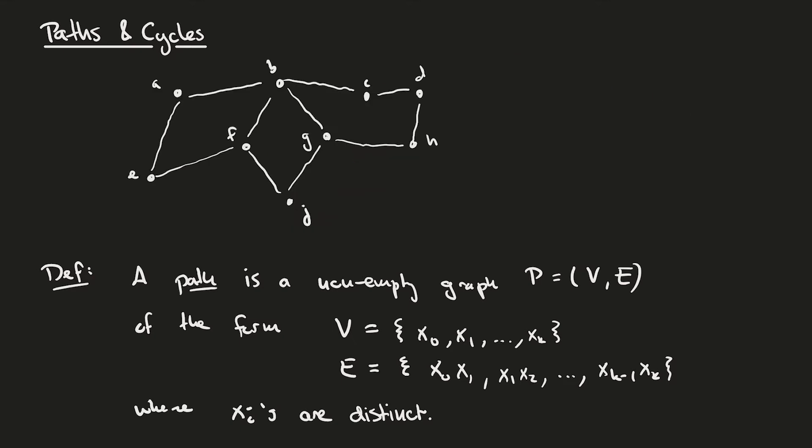To practice this notation, let's consider the following example. I'm drawing a new path, P, and a second path, Q, into this graph. Now P is given by its sequence of vertices as E, F, B, C, D, and Q is given by the sequence of vertices A, B, G, and H.